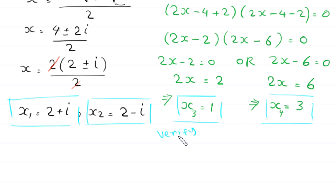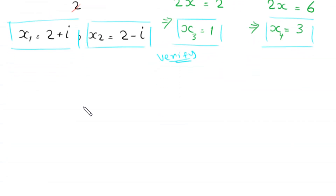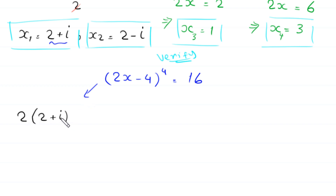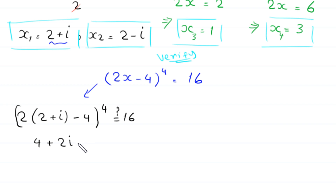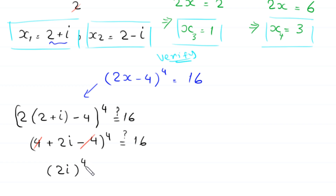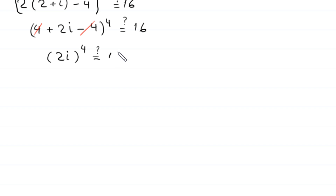Now let us verify these solutions. The original equation is (2x minus 4) to the power 4 equals 16. When x equals 2 plus i, the equation becomes (2 times (2 plus i) minus 4) to the power 4, which simplifies to (2i) to the power 4. Is it equal to 16?